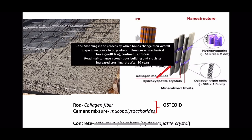Our bone undergoes modeling, and modeling is a continuous normal physiological process in response to mechanical stresses put on the bone — very important for bone health. Bone is not a static organ; in almost 10 years, the whole body bone is replaced with new bone. This happens to maintain bone strength, and also because bone acts as a reservoir of minerals. Whenever there is a shortage of minerals in the body, the reservoir is used — bone is broken down and minerals are taken out. You can compare this to roads being taken down and new roads laid to maintain strength.